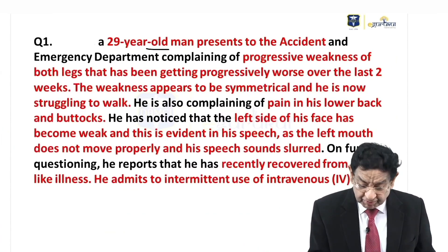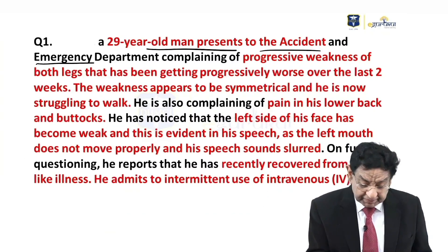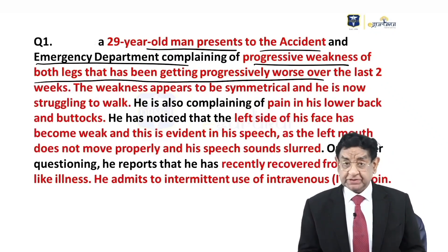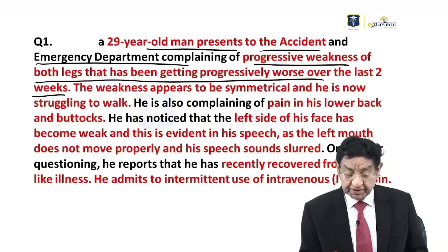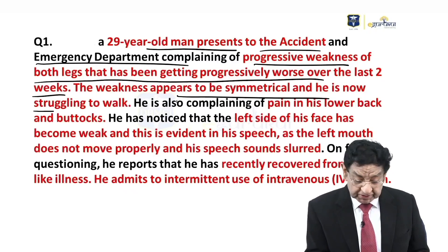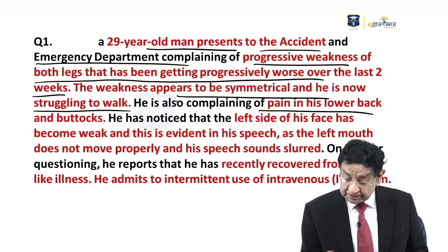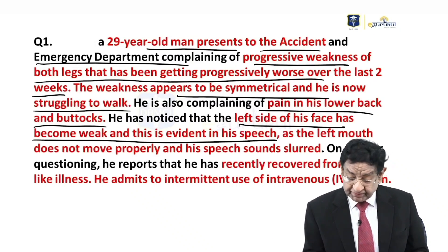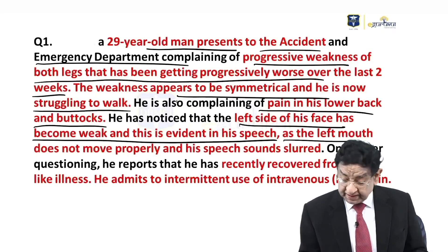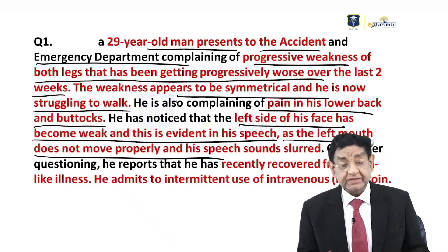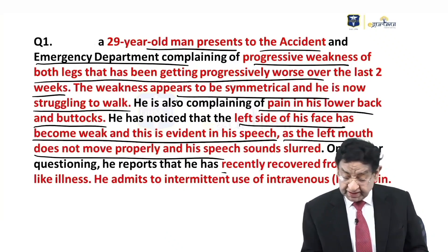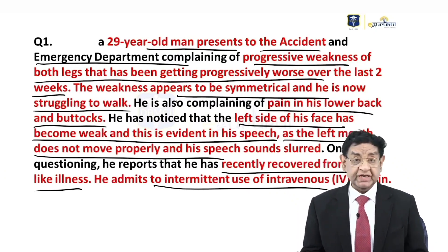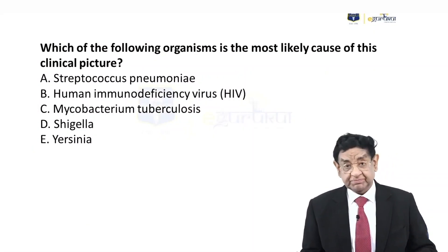We have a 29-year-old man who comes to the accident and emergency department complaining of progressive weakness of both legs, getting progressively worse over the last two weeks. Weakness appeared symmetrical and he is now struggling to walk. He also complained of pain in his lower back and buttocks. The left side of his face has become weak, evident by slurred speech and his left mouth not opening properly. On further questioning, he recently recovered from a flu-like illness and admitted intermittent use of intravenous heroin.